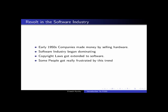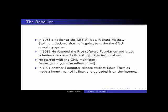The first person to come out and start a revolution was a hacker in the artificial intelligence lab of MIT. In 1983, Richard Stallman declared that he was going to make the GNU operating system.